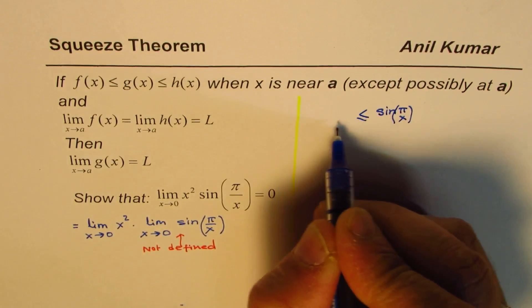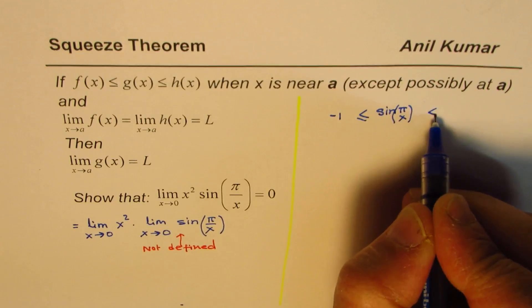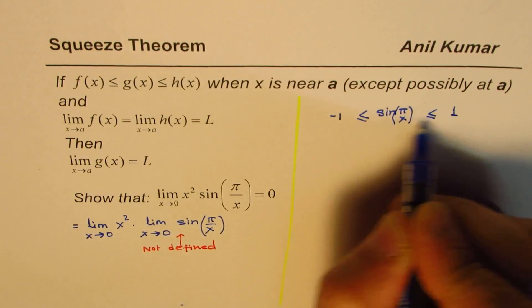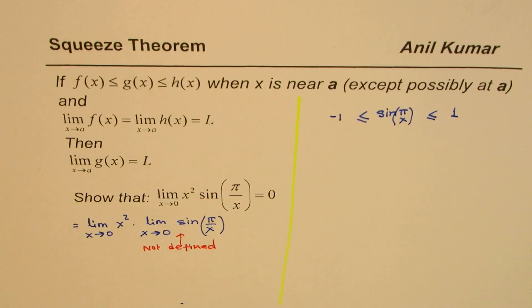As you know, the value of sine function is always between -1 and +1. That is the range of any sine function.